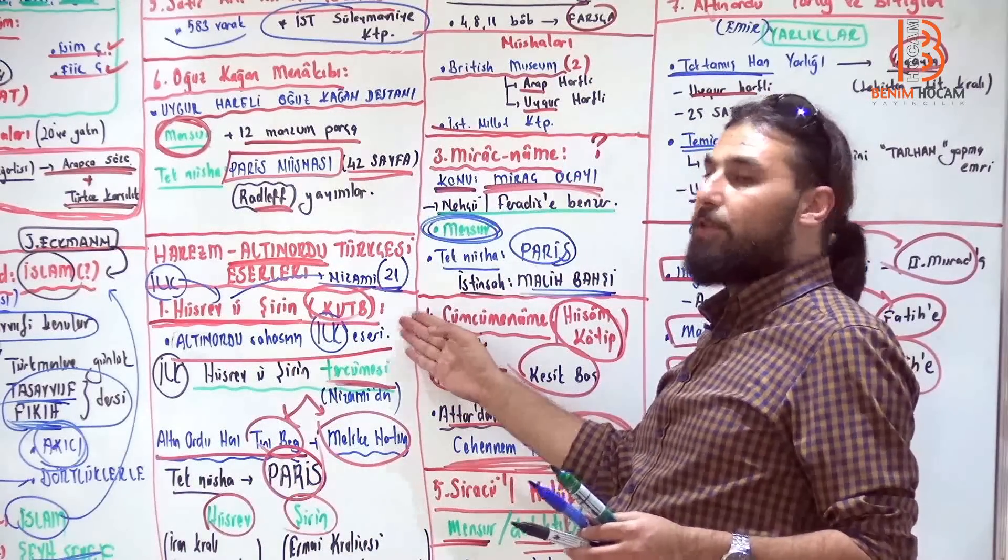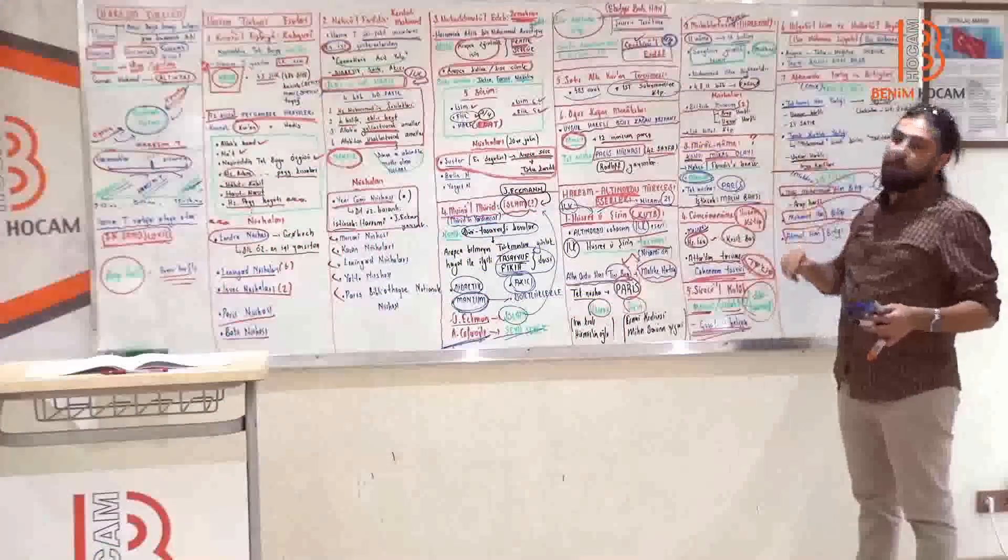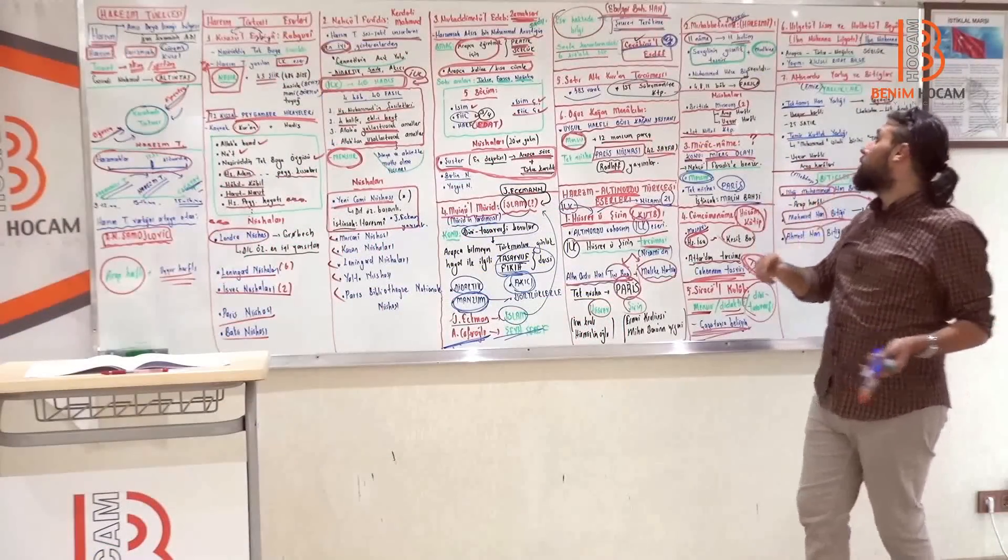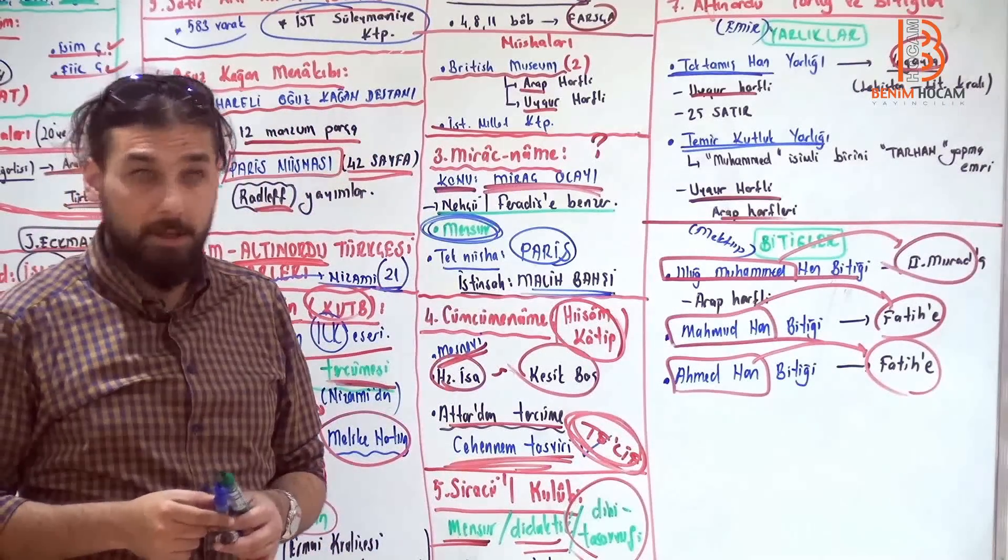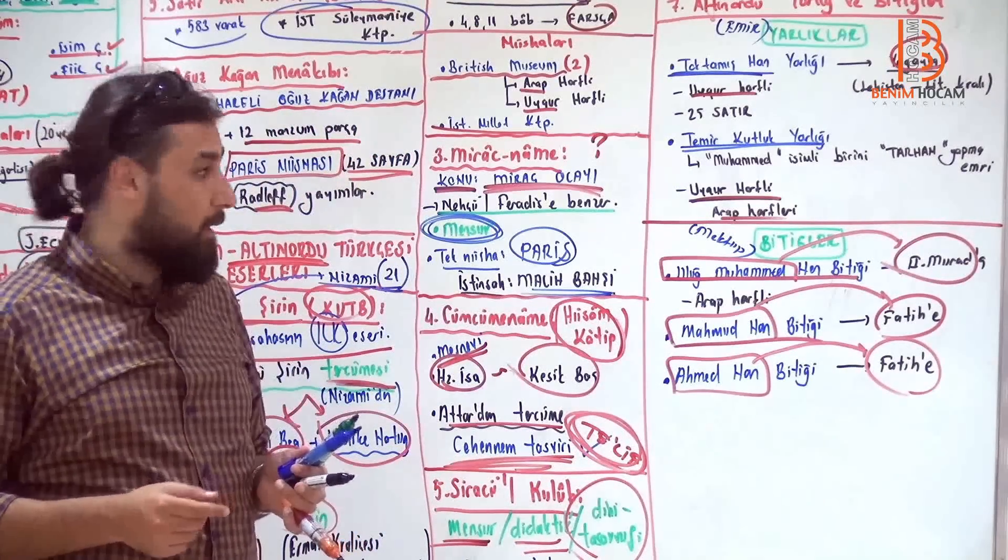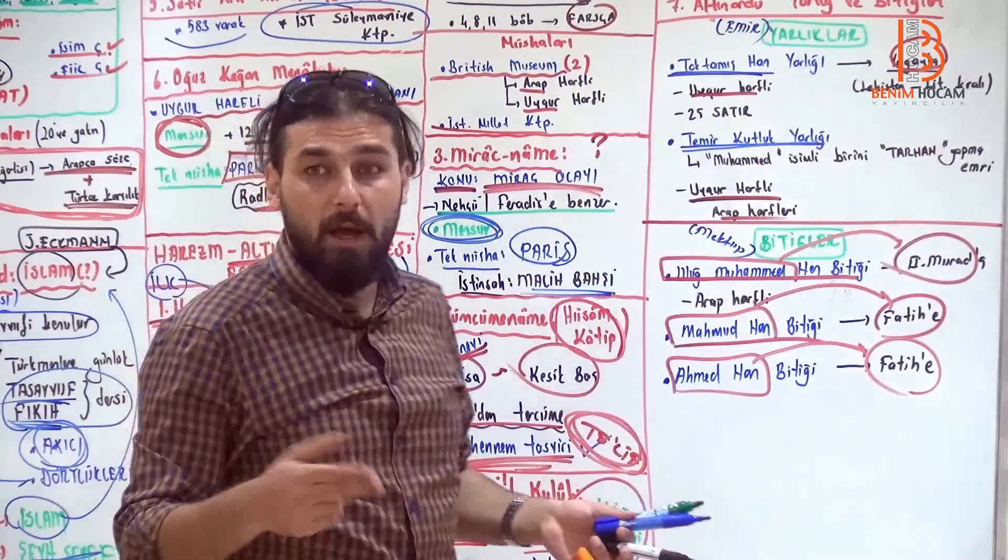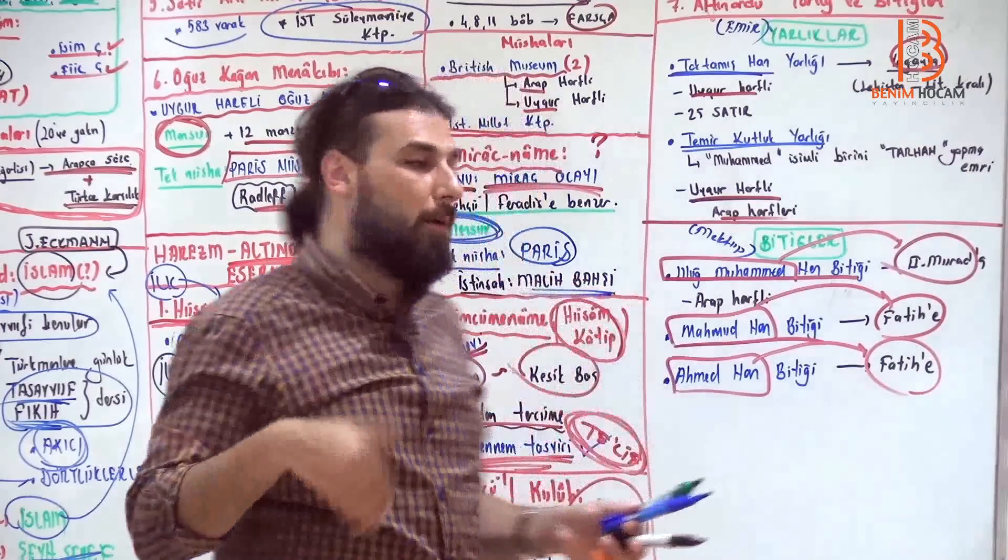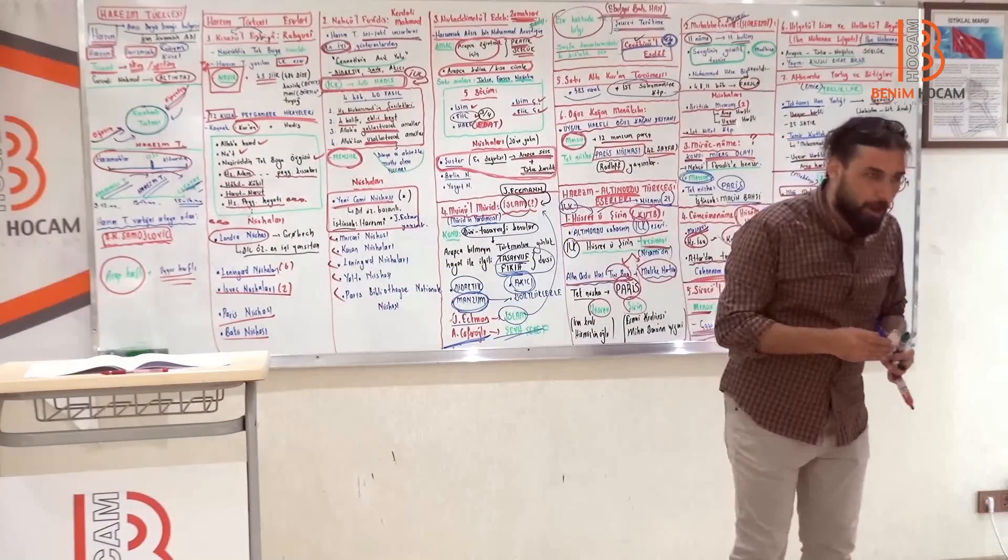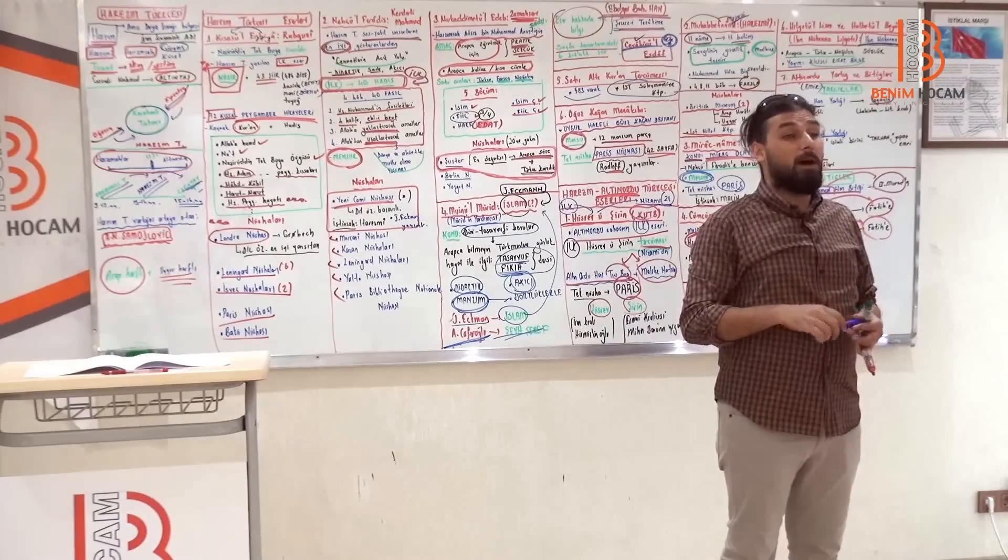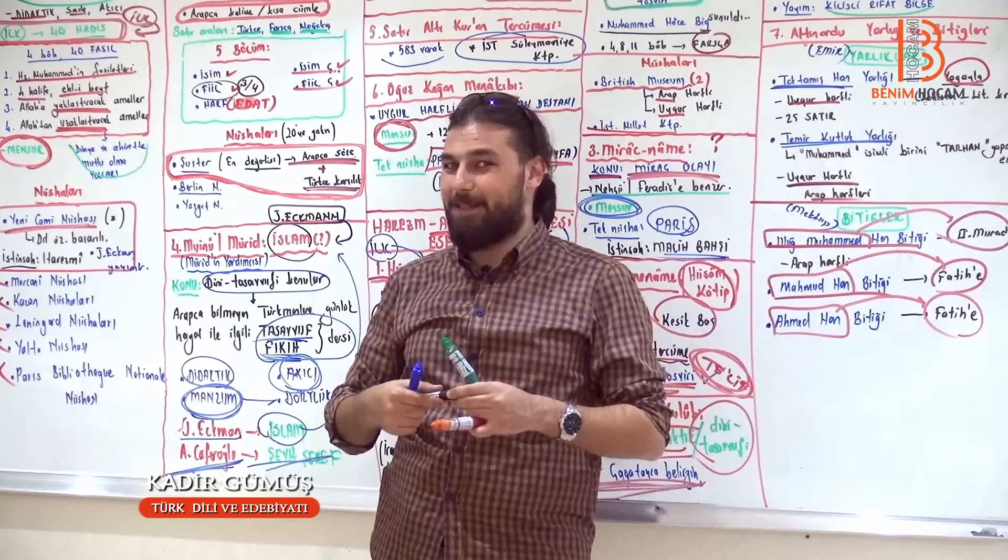Altınordu'yu şöyle toparlayacak olursak bir daha. Bir, Kutb, Hüsrev Şirin, Aşk, Muhabbetname aynı şekilde aşk mektup tarzında. Miraçname, Hüsem Katib'in Cümcüme Name'i. İbni Muhanna Lugatı. Altınordu yarlık ve bitikleri. Birisi Toktamış Han, birisi Temirkutluk yarlık. Üç bitik Ulu Muhammed'in ikinci Murat'a, Mahmut Han'ın Fatih'e, Ahmet Han'ın Fatih'e. Mahmut Ahmet Fatih. Şunları bir kere daha toparlamış olduk mu? O zaman diğer videoda artık Harezm Türkçesinin ses ve şekil özelliklerine merhaba diyebiliriz. O zaman 176. videoda görüşmek üzere. Kendinize iyi bakın. Esen kalın.